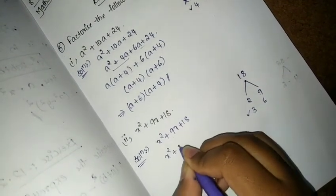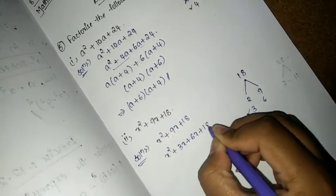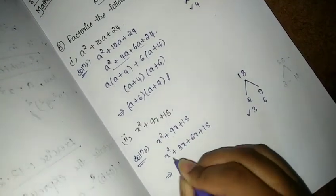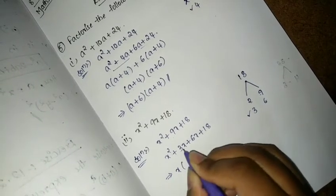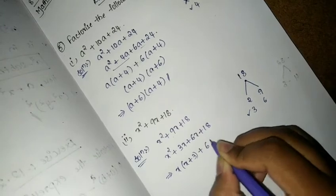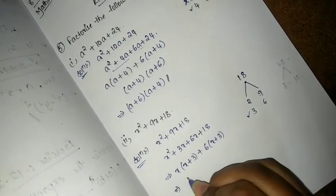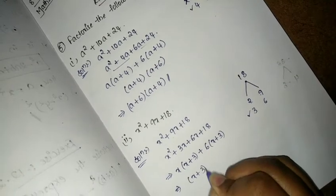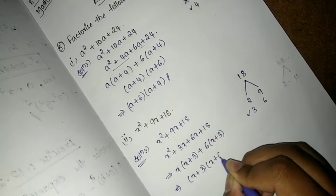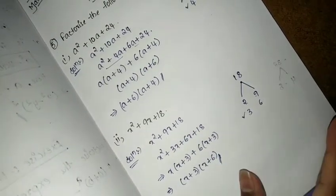x² + 3x + 6x + 18. Here we have x common from these 2 terms, then we get x plus 3. Here 6 common, x plus 3. Then we get x plus 6. This is our final solution for the problem 2.